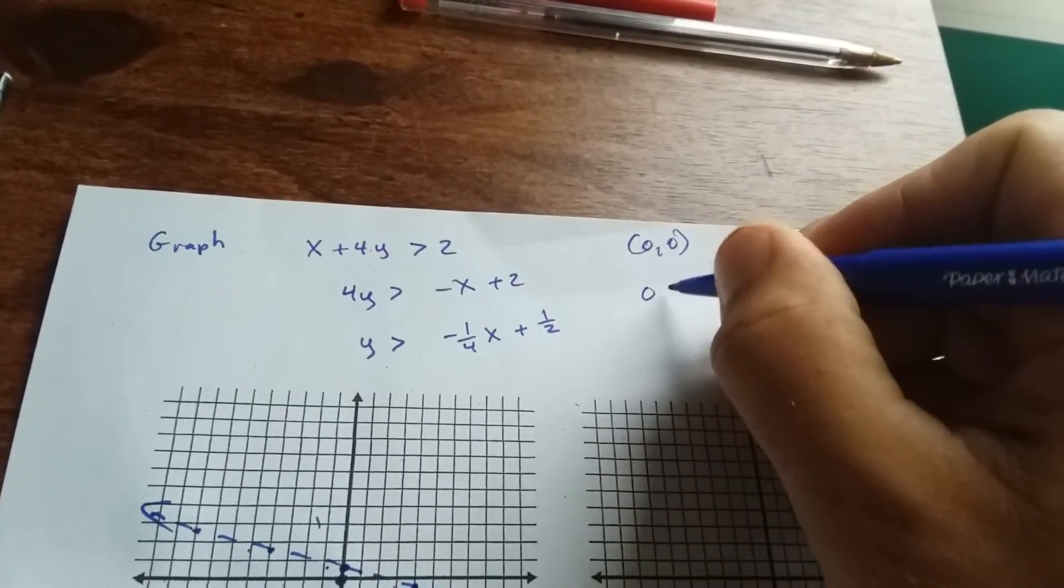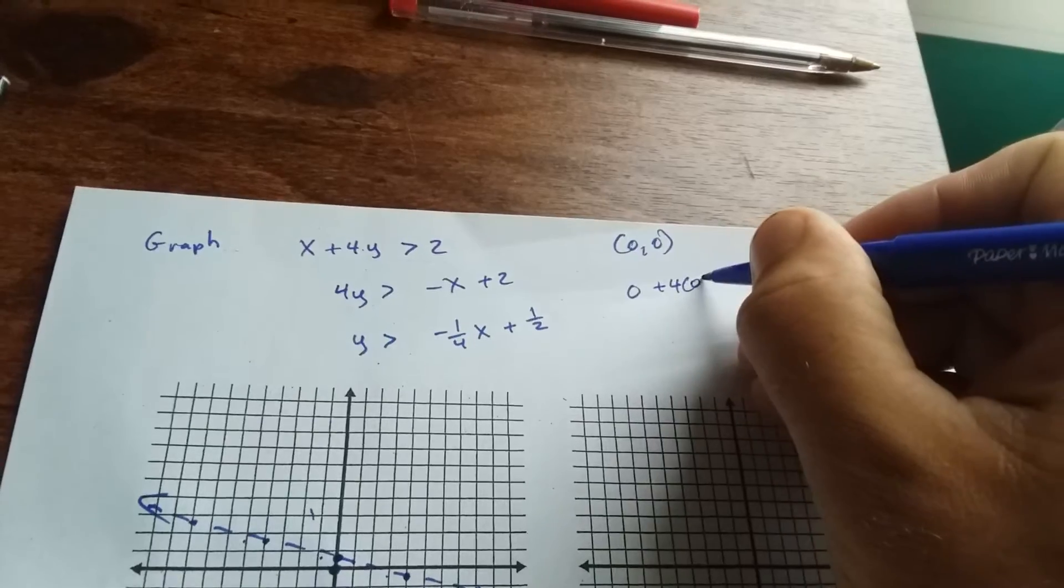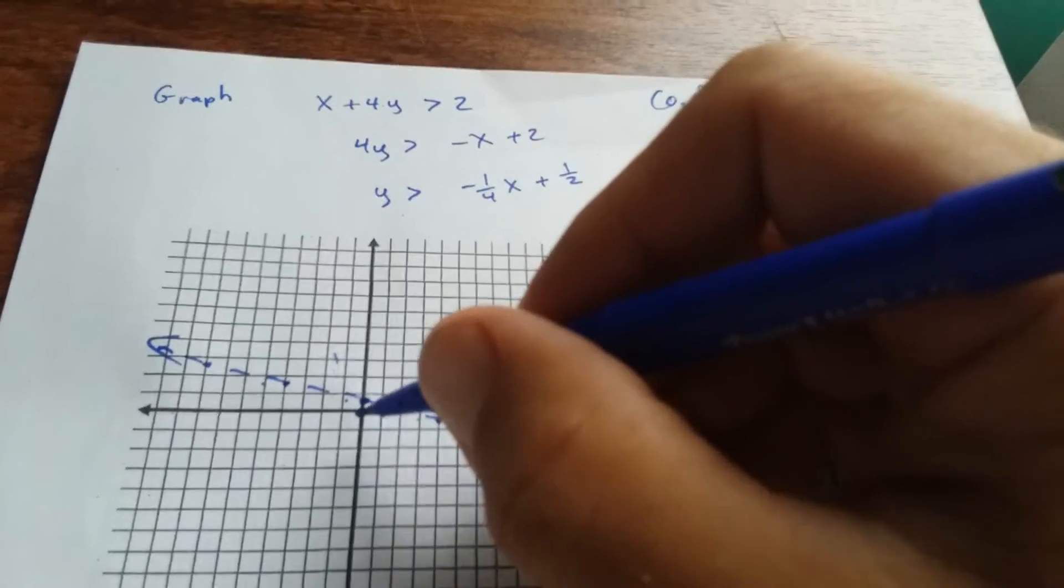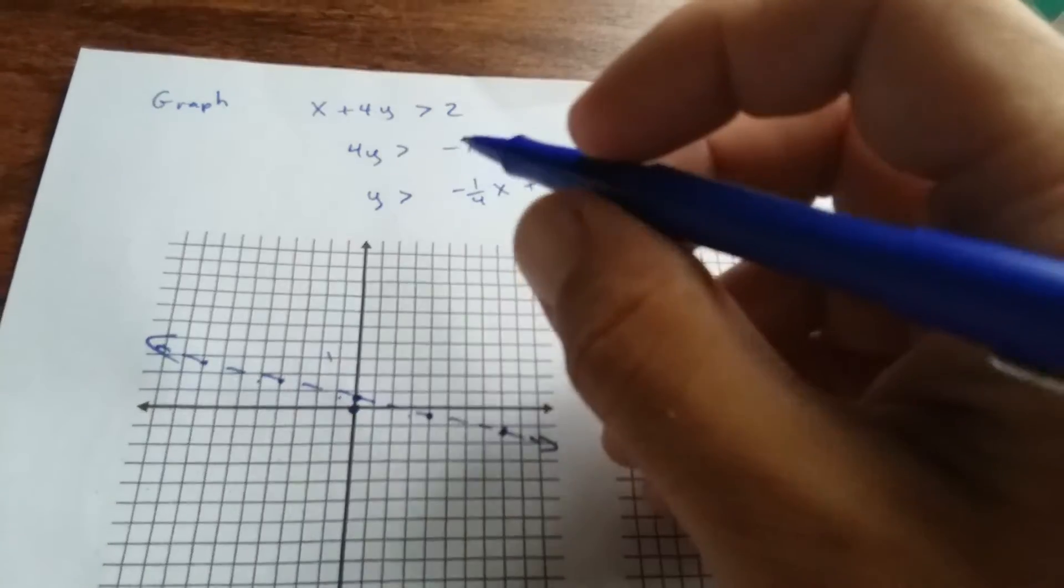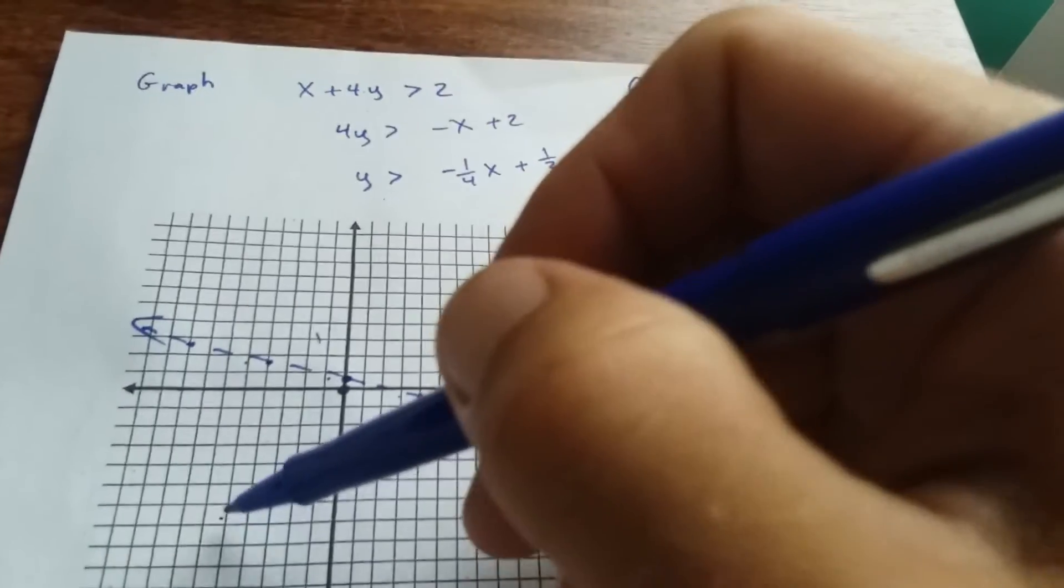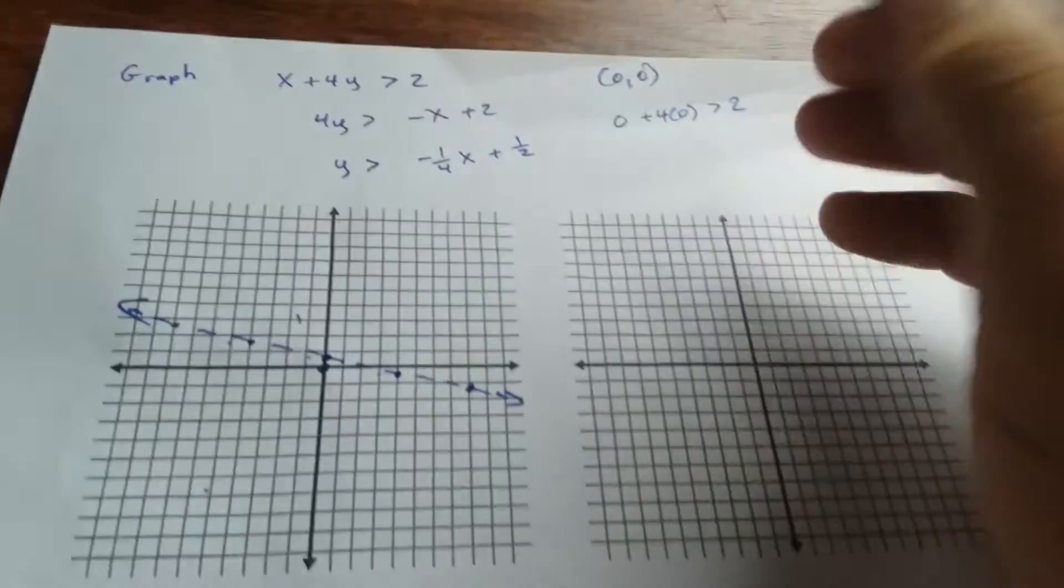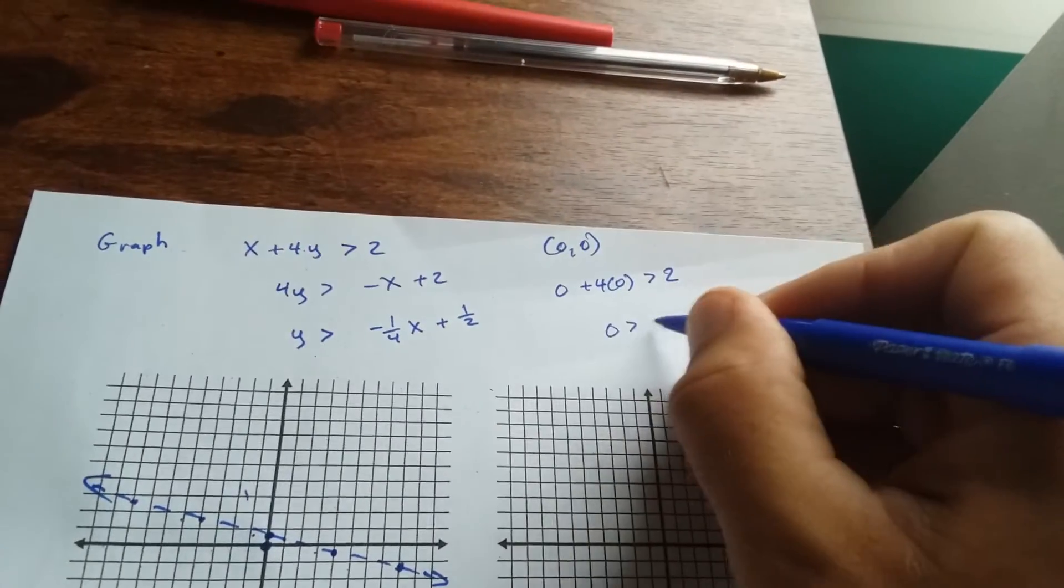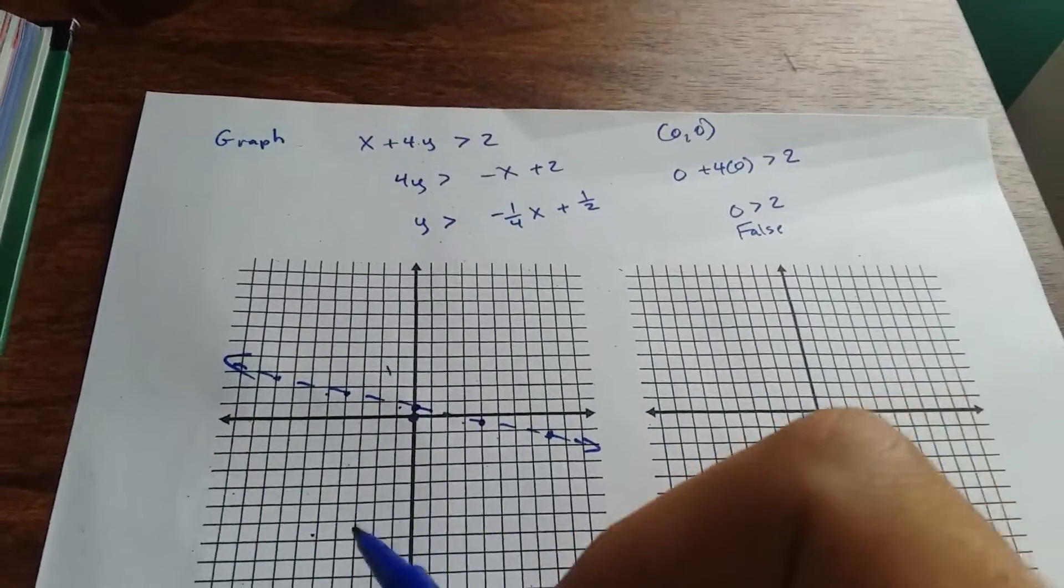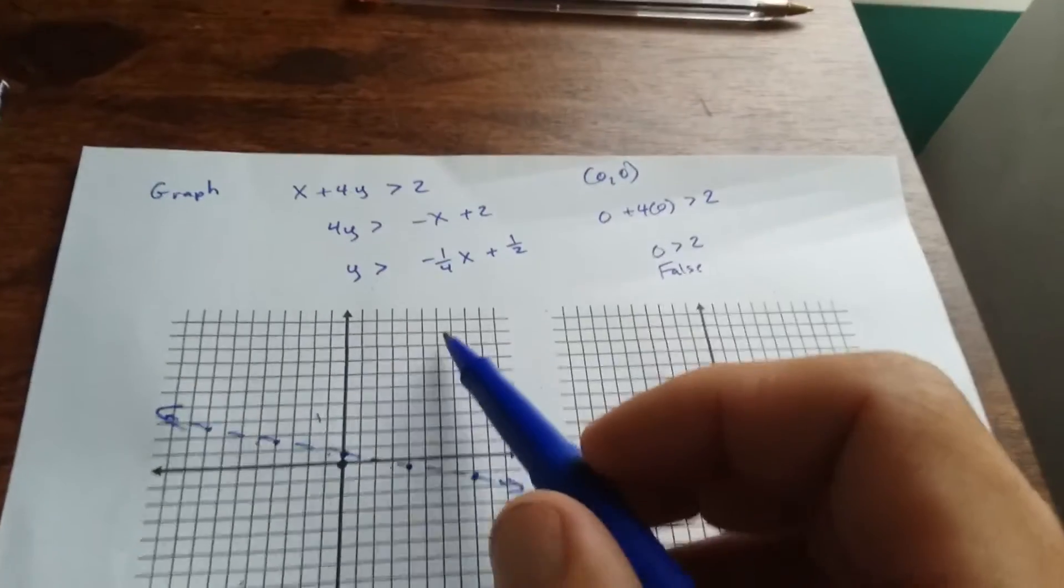So if I plug in 0 for x and 0 for y, I get 0 plus 4 times 0 is greater than 2. Now if this is true, 0, 0 satisfies the inequality, and this side is where the solutions lie. But we end up with 0 is greater than 2. That is a false statement. So that tells me this side you have no solutions. The solutions are going to be up here.